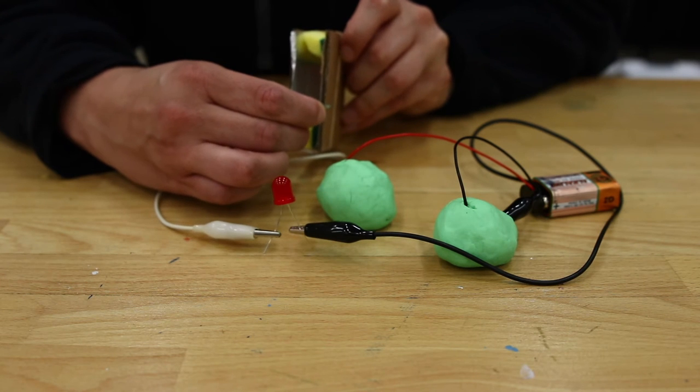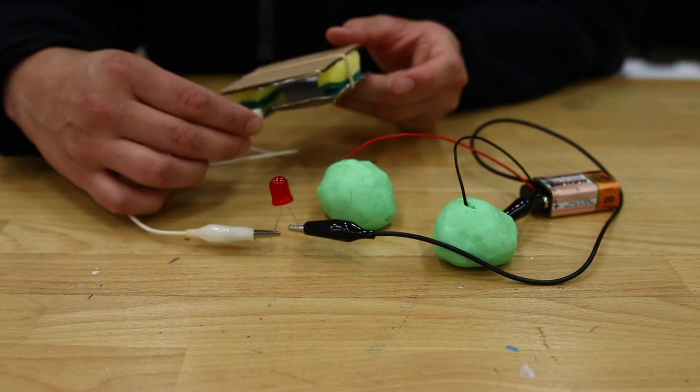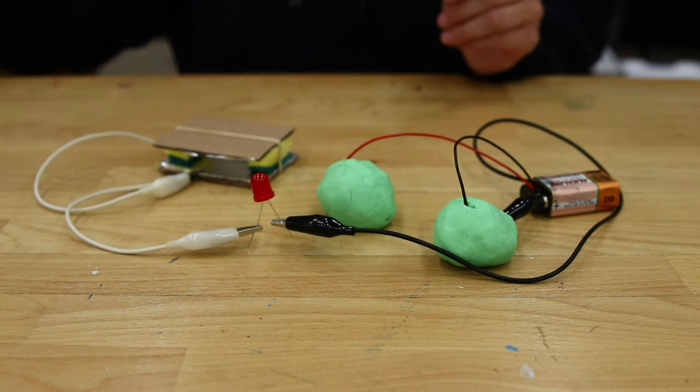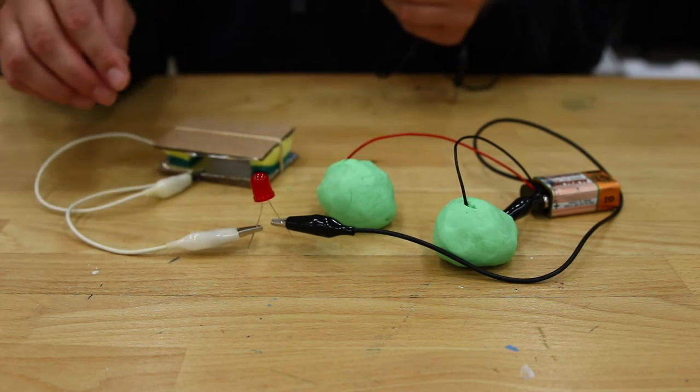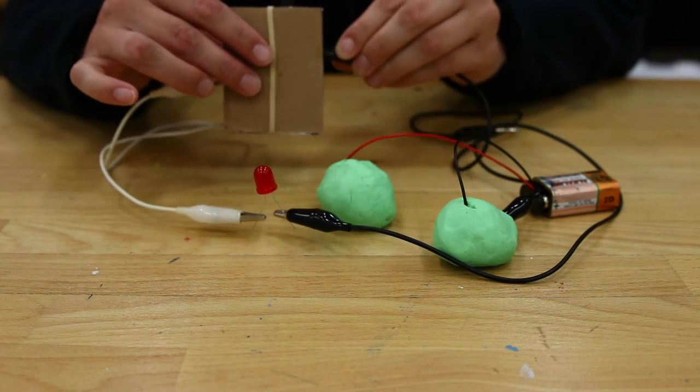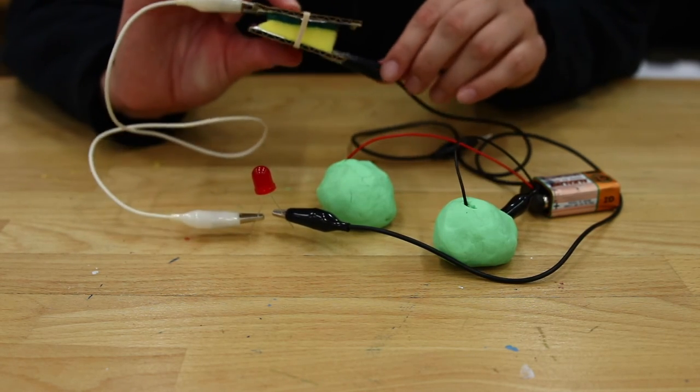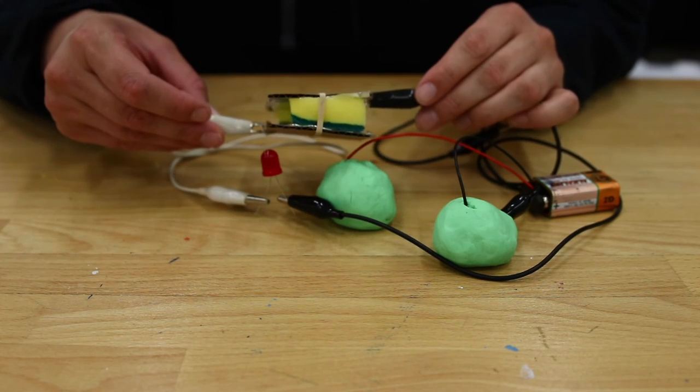Then take that same alligator clip and attach it to one end of your cardboard sponge sandwich. Make sure that the metal part of the clip is touching the aluminum foil. Next, grab a third alligator clip and attach it to the other side of your sponge sandwich. Here you can see one clip is attached to the top part of my sandwich and the other is on the bottom.